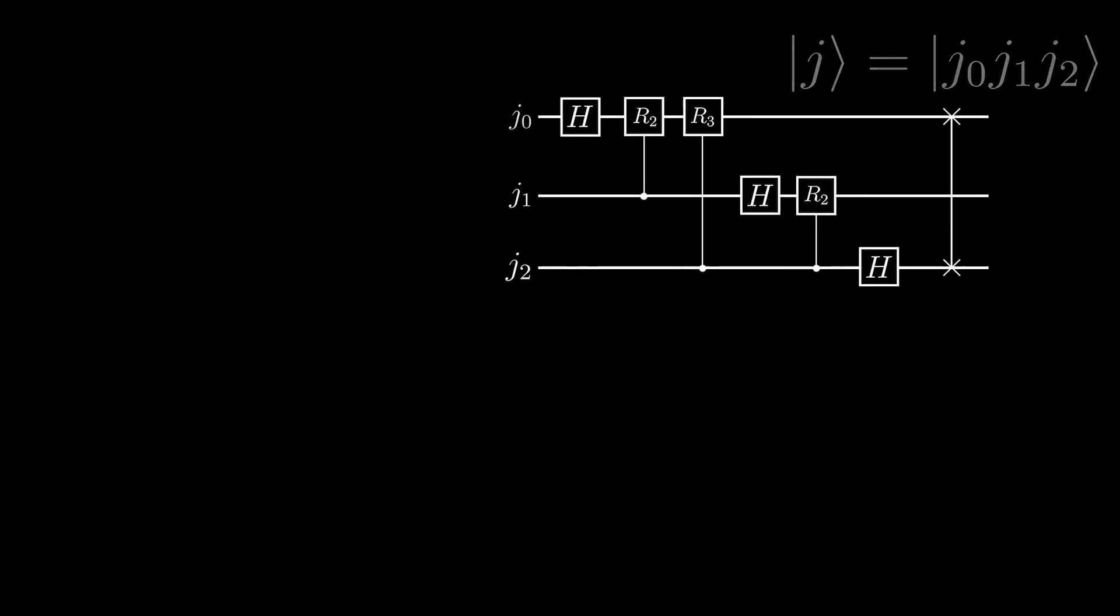Let's start with finding out what j0 becomes. After the Hadamard gate, the state becomes 1 over root 2, 0, plus negative 1 to the power of j0, 1. We can represent this like this. You will see why we keep the j0 divided by 2 and don't simplify the fraction at the end.